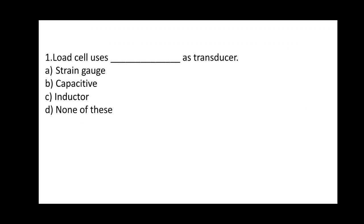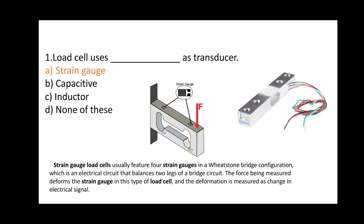First question: A load cell uses dash dash as a transducer. Options: A) Strain gauge, B) Capacitive, C) Inductor, D) None of these. The correct answer is option A, strain gauge. A strain gauge load cell usually features four strain gauges in a Wheatstone bridge configuration, an electrical circuit that balances two legs of a bridge circuit. The force being measured deforms the strain gauge, and the deformation is measured as a change in electrical signal.